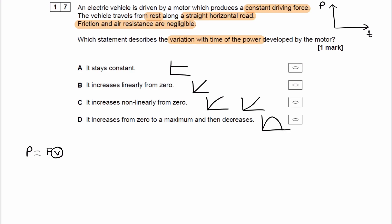There's a constant driving force and we're told that friction and air resistance are negligible. So our car, let's say this is our car, experiences a constant forwards driving force and no backwards force. Therefore this driving force is the resultant force. The resultant force is constant and therefore because F is equal to ma, that means the acceleration will be constant as well.